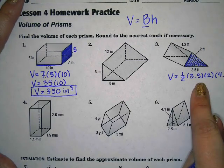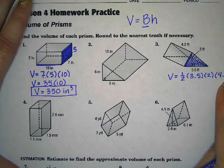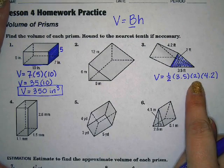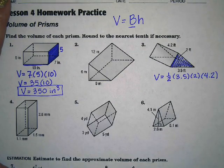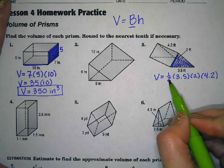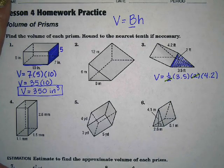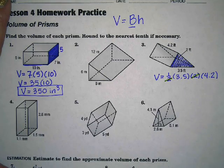Now when we start to multiply these out, we can put this in our calculator as 0.5 times 3.5 times 2 times 4.2, or we can simplify first. Now because this is a fraction, we can simplify this 2 with the 2 in the fraction. So this 2 and that 2 cancel each other out. And then we would just have to multiply the 3.5 times the 4.2.